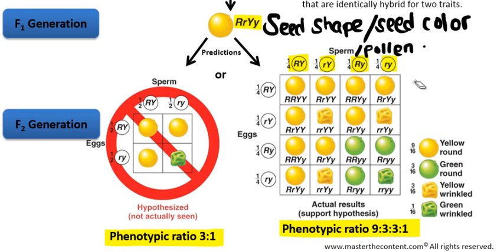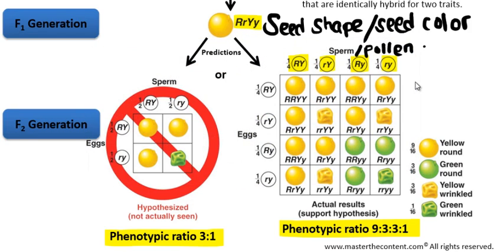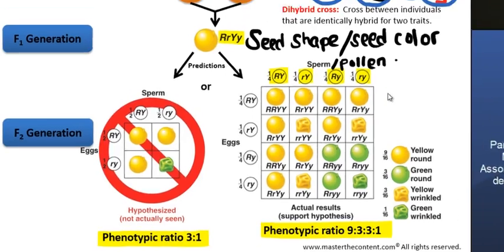The result of this experiment is the basis of what we now call the law of independent assortment, which states that during gamete formation, each pair of alleles segregates independently of other pairs of alleles. Alternatively stated: during gamete formation, a pair of alleles segregates and combines randomly with either member of another pair. That, in a nutshell, is the law of independent assortment — dealing with the independent assortment of alleles of genes.